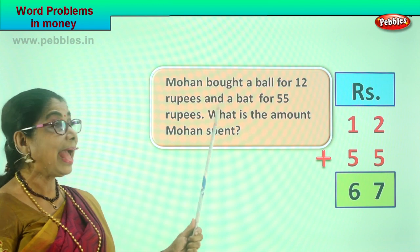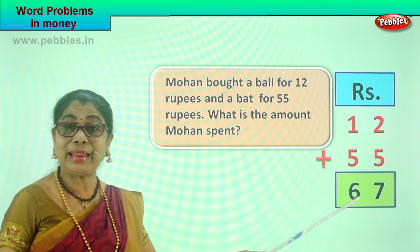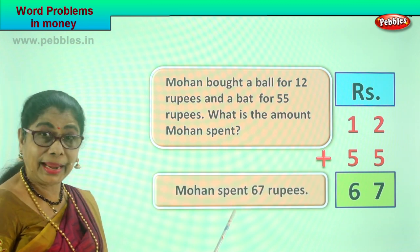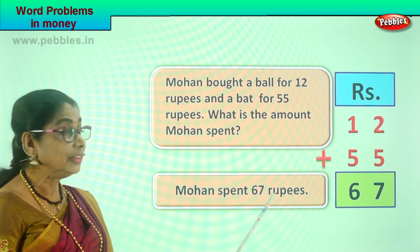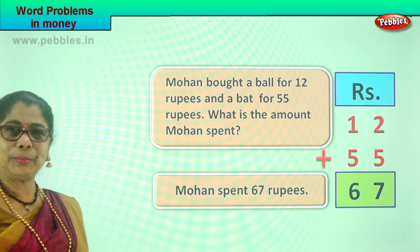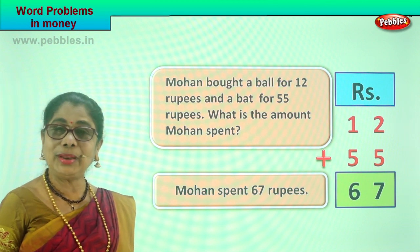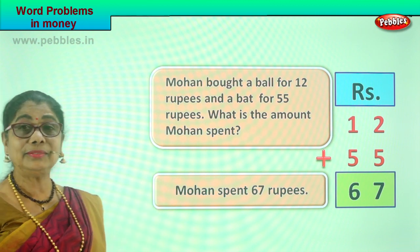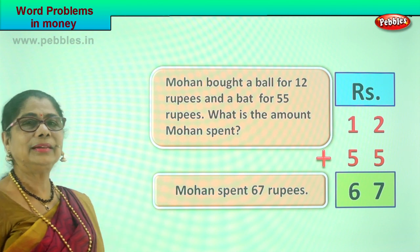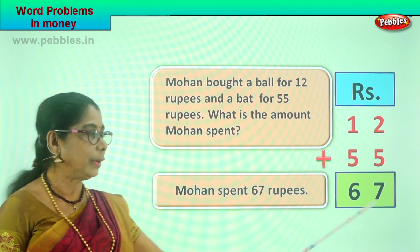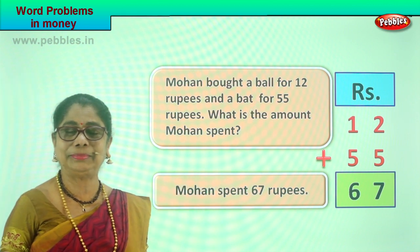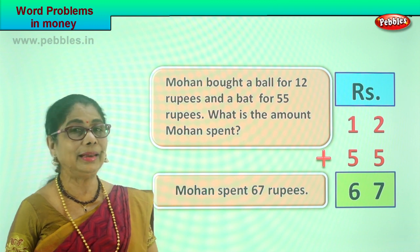For the cost of a ball and a bat, Mohan spent 67 rupees. What is the amount Mohan spent? Mohan spent rupees 67. Did you enjoy the problem? Did you like shopping — going shopping with Mohan? So Mohan told dad: please give me 67, and dad gives him 67 rupees and he gives it to the shopkeeper. Mohan spent 67 rupees for a bat and a ball.